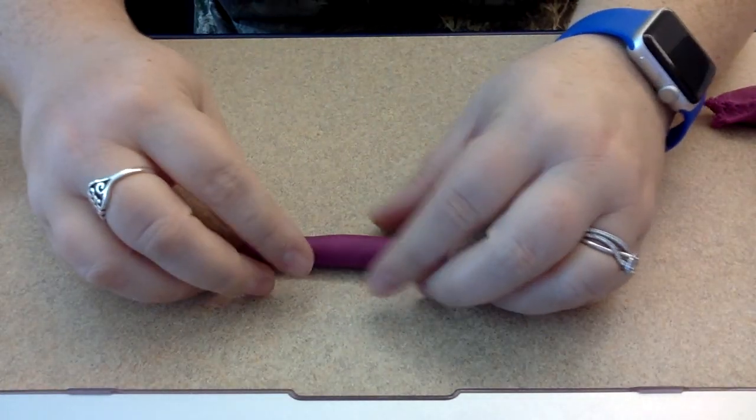So I'm going to take a piece of Play-Doh, and I'm going to rub it between my hands to make it a line. There's one side.